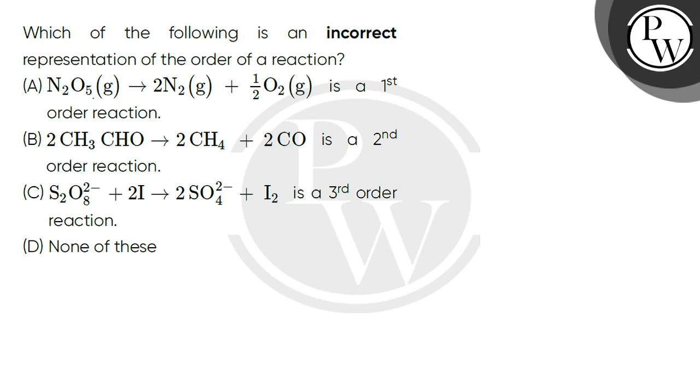So first, N2O5 gas is decomposed to 2N2 gas and half O2 gas, stated as a first order reaction. This is true. It follows first order kinetics. The rate of reaction depends on the single power of the concentration of N2O5. So this is not our option.